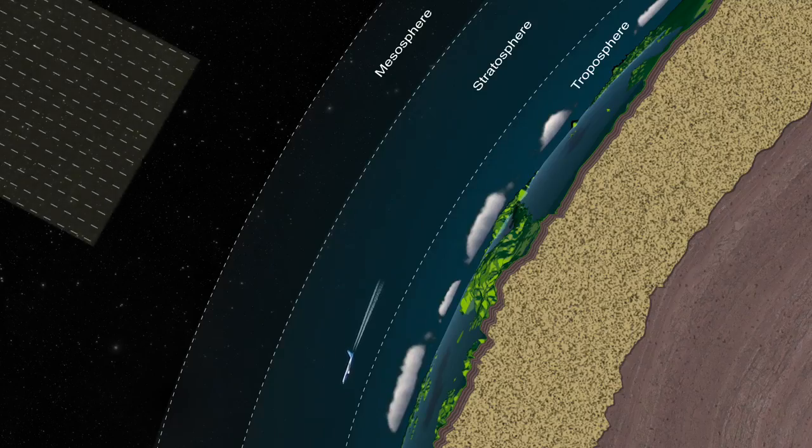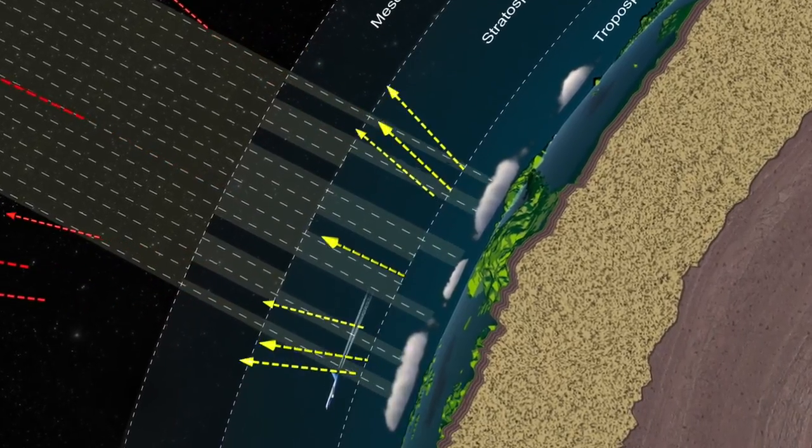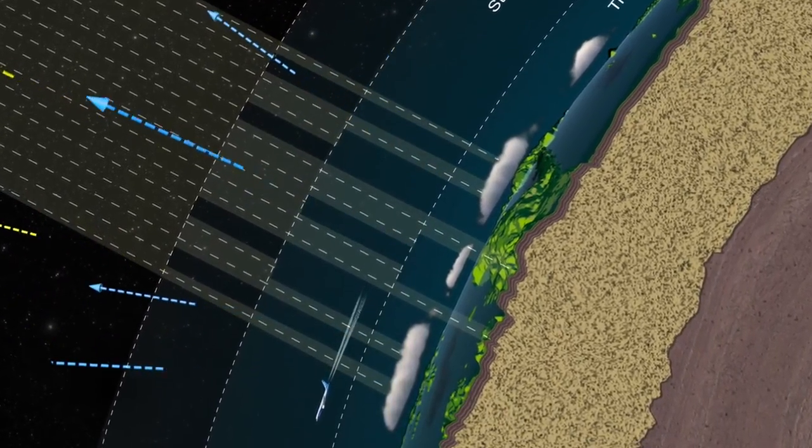Clouds affect how much of the sun's energy reaches Earth, which can be difficult to calculate without knowing how each cloud blocks, absorbs, or transmits light.